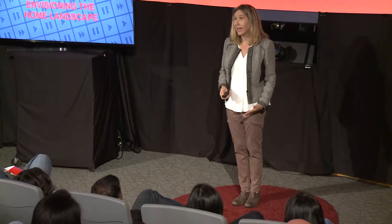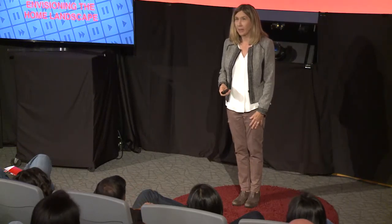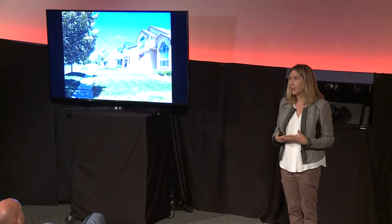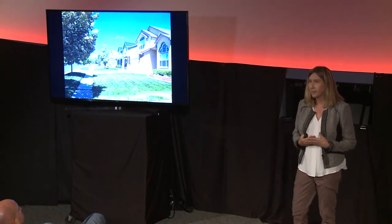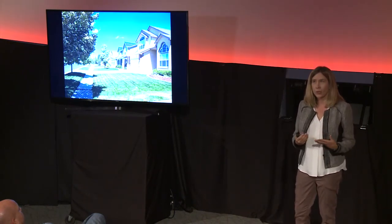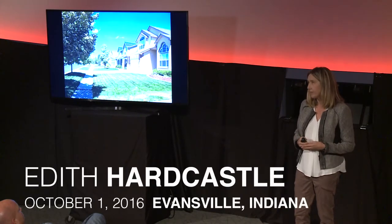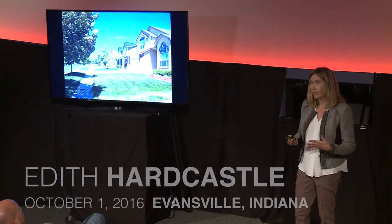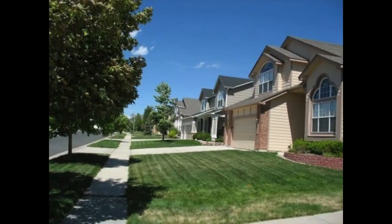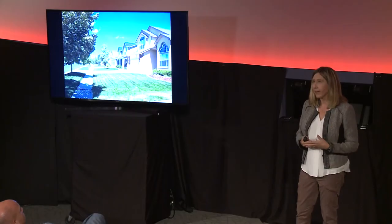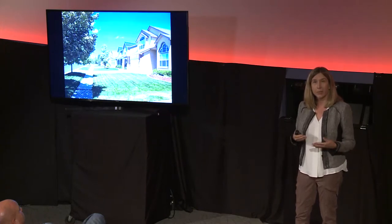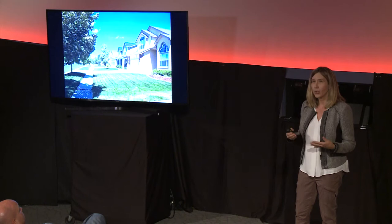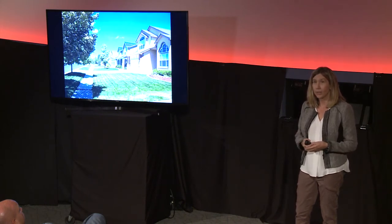I would like for you all to imagine your ideal vision of the home landscape. The picture I'm going to show you isn't my ideal vision, but it is the most common version of the home landscape today — usually an expansive lawn with a tree and some shrubs around the foundation. This is the assembly line version of the landscape, meant to maximize uniformity between homes and minimize costs, but it almost never contains plants native to the area.